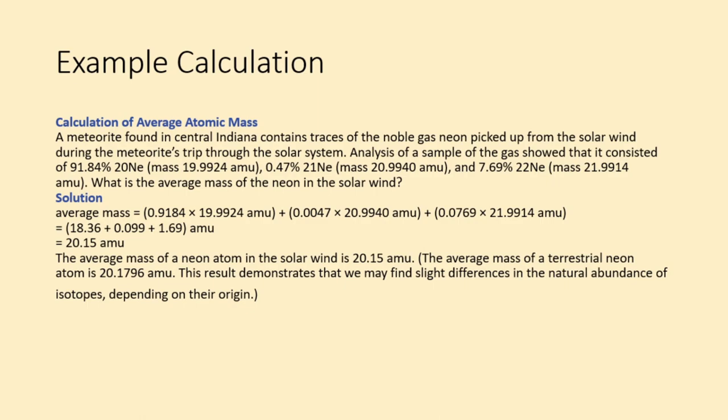The average mass of a terrestrial neon atom is 20.1796 amu. This result demonstrates that we may find slight differences in the natural abundance of isotopes, depending on their origin.